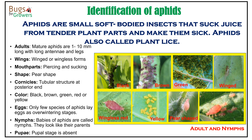Depending upon their species, they can be black, brown, green, red, or yellow in color. Aphids can be wingless or winged, but most of the aphids that we come across are wingless forms.